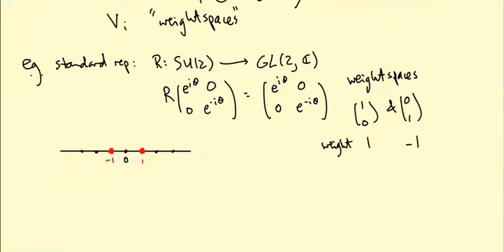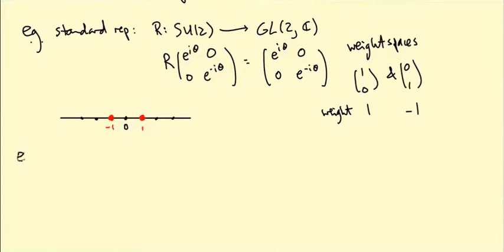Let's do the example of the representation SU2 goes to GL little su2 tensor C, this three-dimensional representation that we studied in some detail. So at some point we calculated the map r star on the algebra.